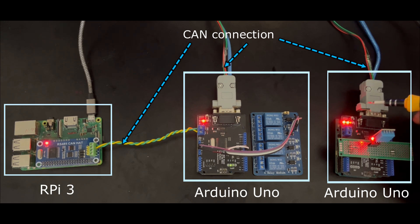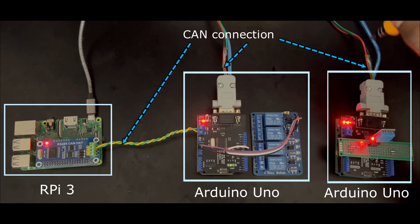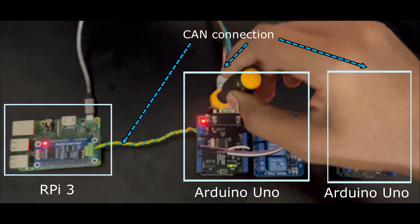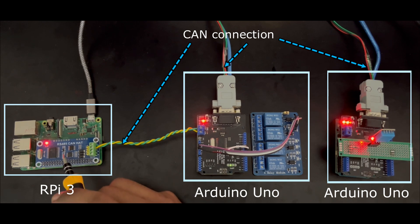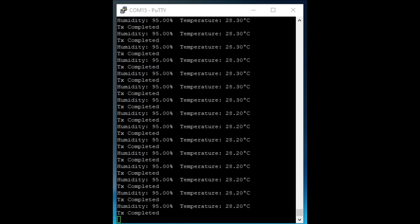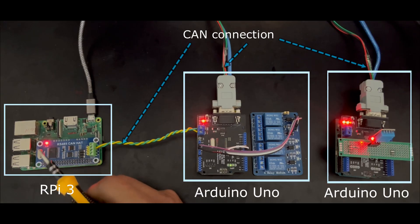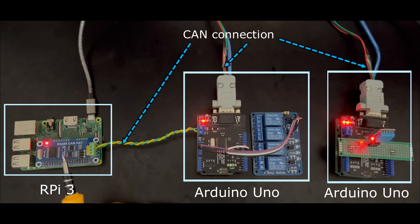From the sensing node, we are transmitting the DHT11 sensor data through a custom DB9 connector which carries the CAN high, CAN low, and ground lines. This is connected from the rightmost node to the central node, and from there the CAN high and CAN low lines are connected directly to the shield on the Raspberry Pi. This is the serial monitor of the sensing node — you can see the humidity and temperature values, and confirmation of the CAN message transmission.